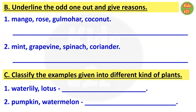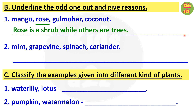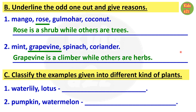Next worksheet, for question B, kids need to choose the odd one out and also write the reason. For the first one — Mango, Rose, Gulmohor, and Coconut — the odd one is Rose, because Rose is a shrub while others are trees. For question 2, the odd one is Grapevine, because grapevine is a climber while others are herbs.